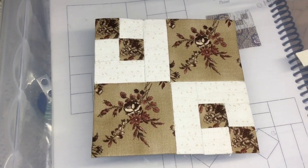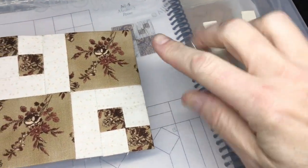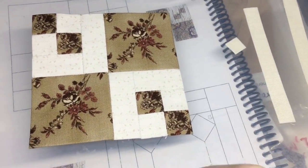So I've attached my rows together and now my M5 block is complete. And the only thing left to do is to add my sashings and cornerstones along this edge.